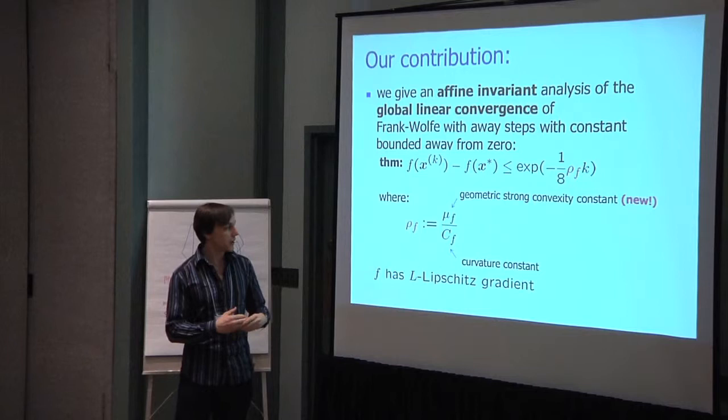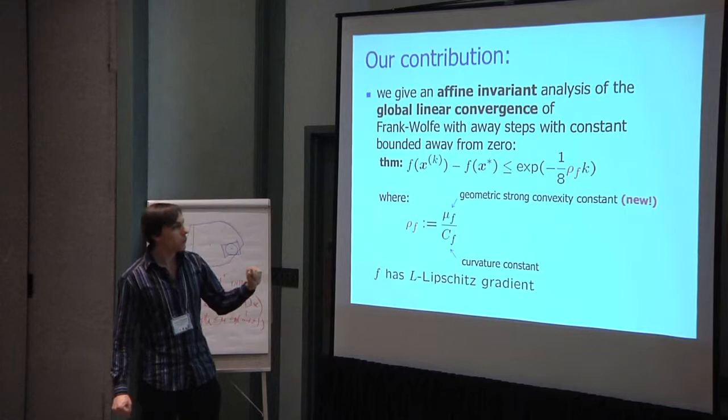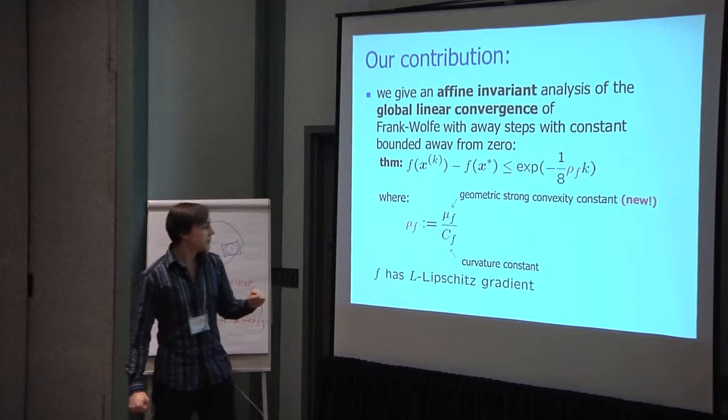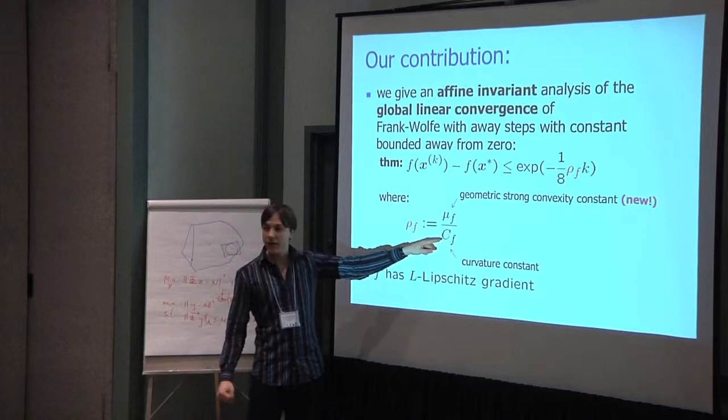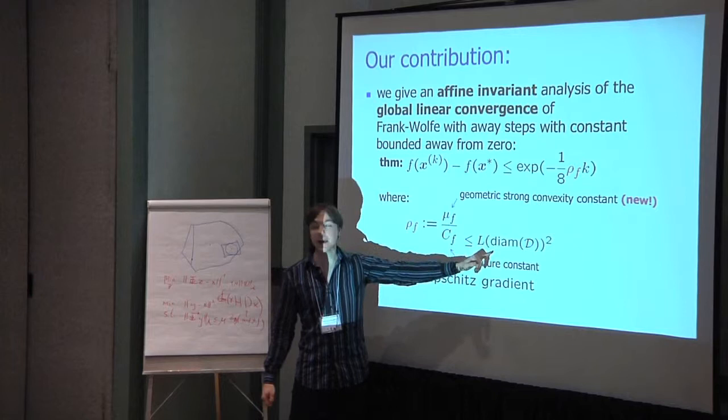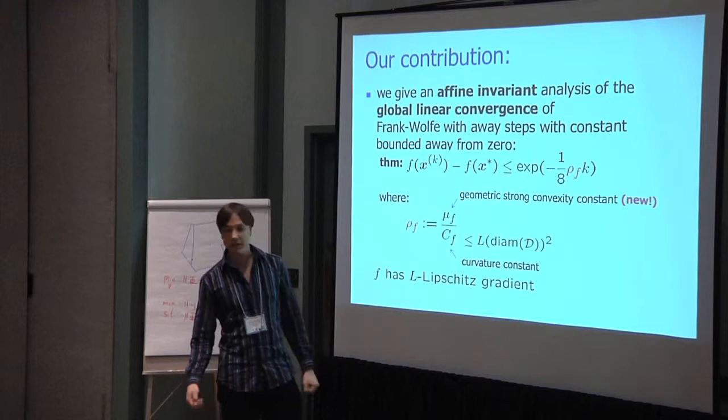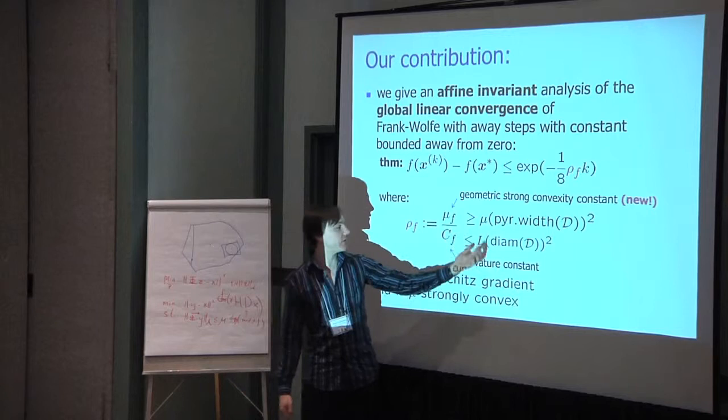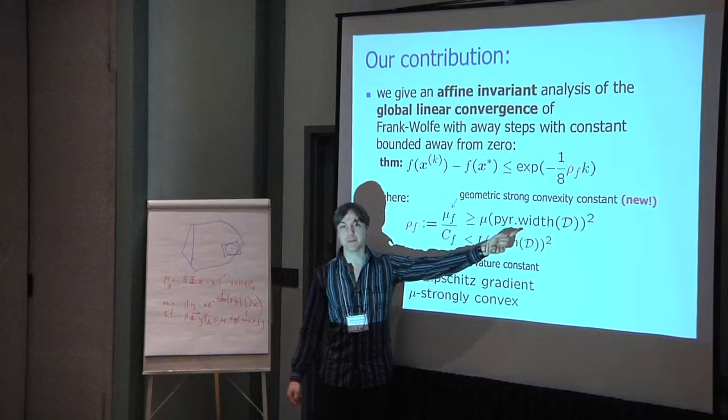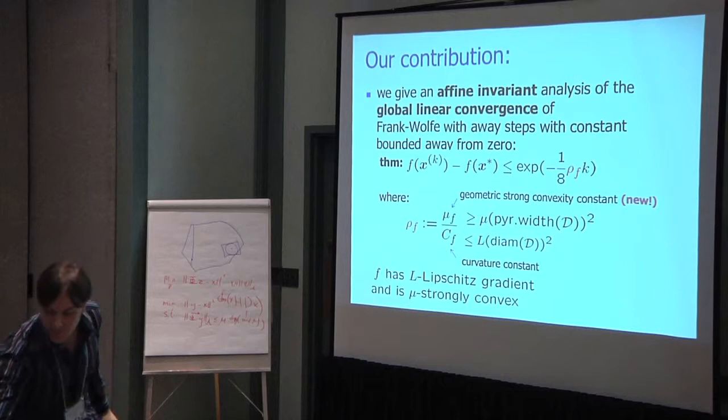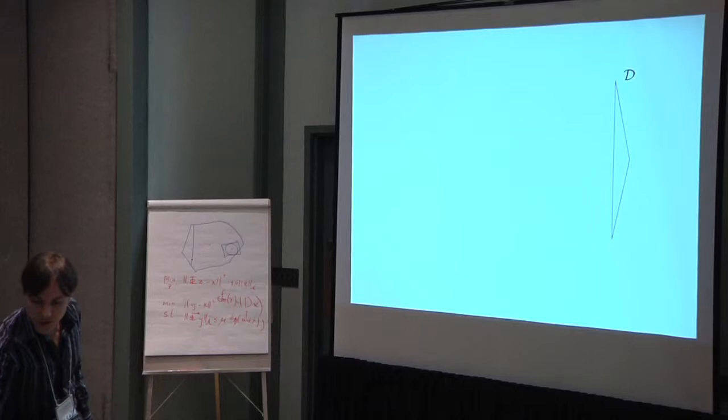Just to get a sense of those constants, which both of those constants are affine invariant. I won't go into the definition, but you can come to my poster to see the exact definition of the constant. If f has L Lipschitz gradient, then you can bound c_f by the Lipschitz constant times the diameter of your domain, squared. And if also f has mu strong convexity, then you will have a lower bound on this geometric strong convexity, so it's very similar in analog. You have strong convexity and then the pyramidal width of the diameter. So it's kind of a notion of width, but a bit more different because of the away step.